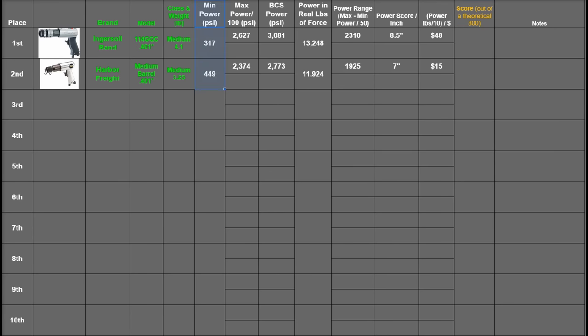The max power run is turned into points, but less dramatically so than the BCS run, so that's 26 points for the IR and 24 points for the Harbor Freight. Their best-case scenario runs at the higher pressure are recorded here and turned into points like so. That's 308 and 277.